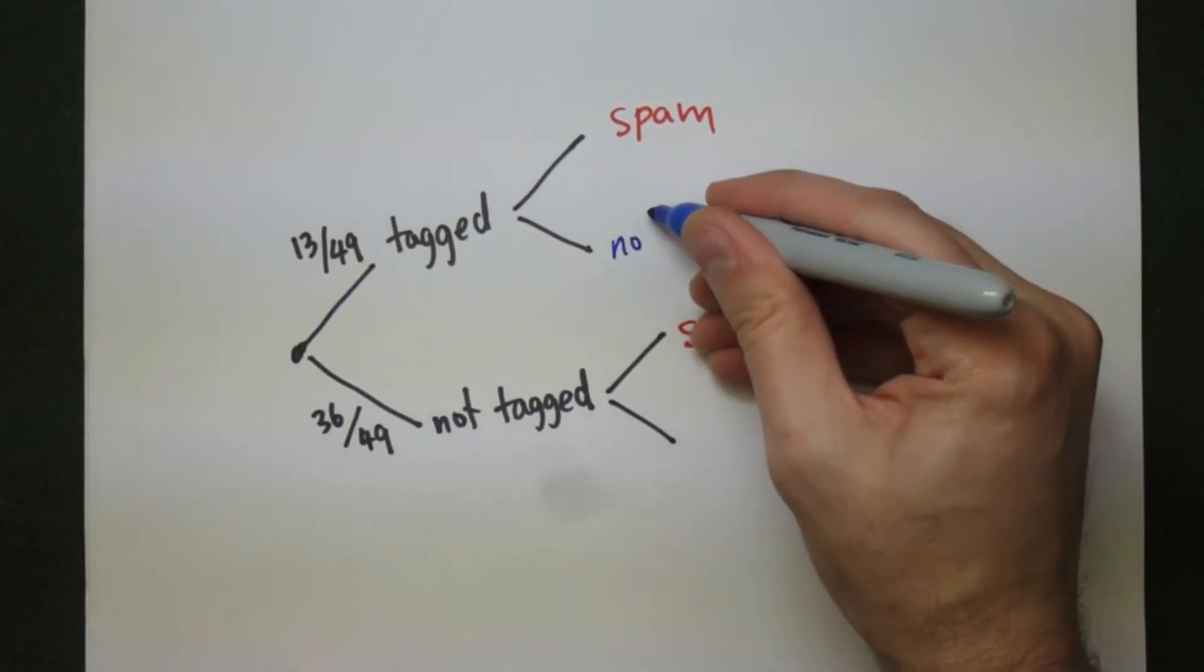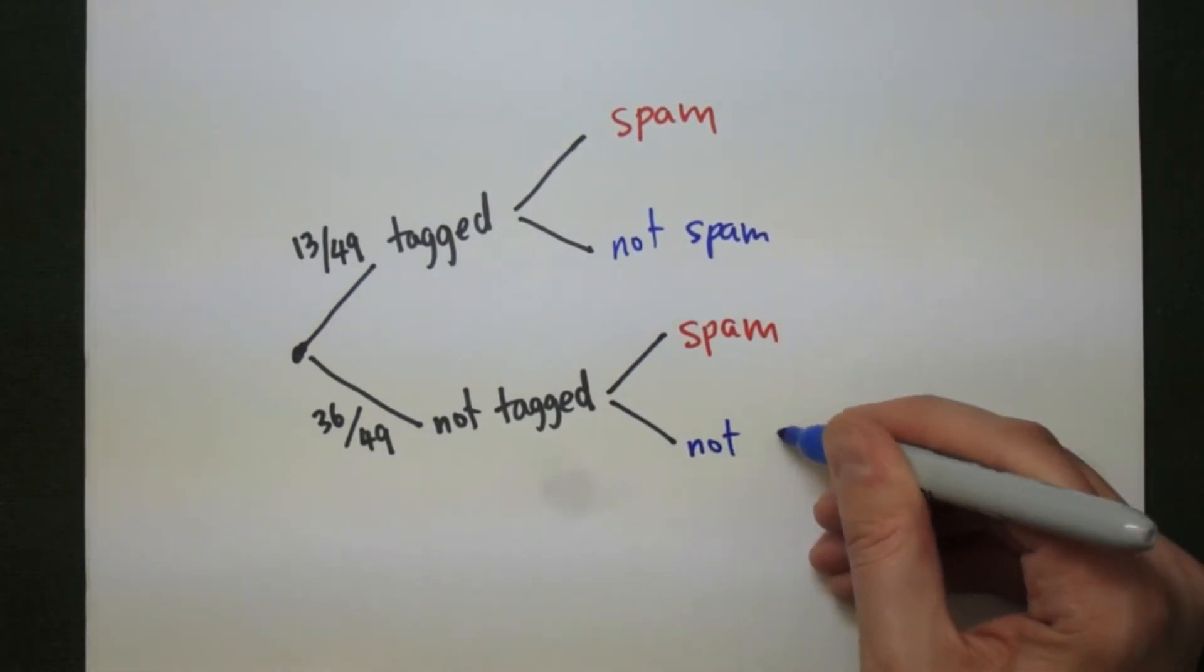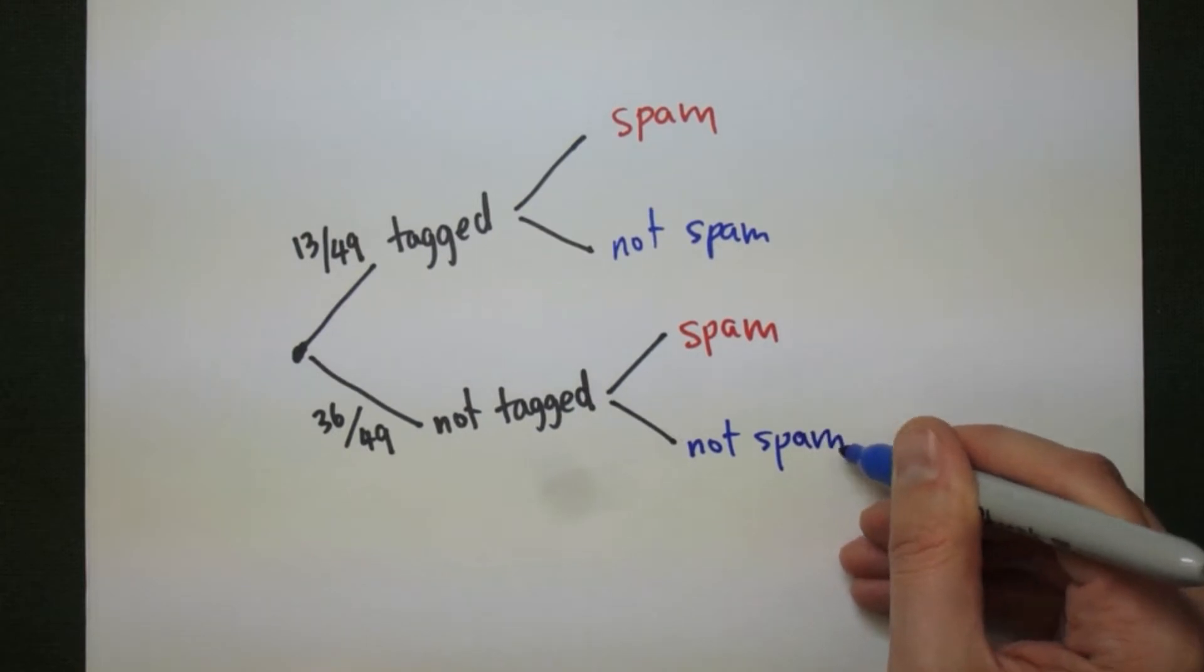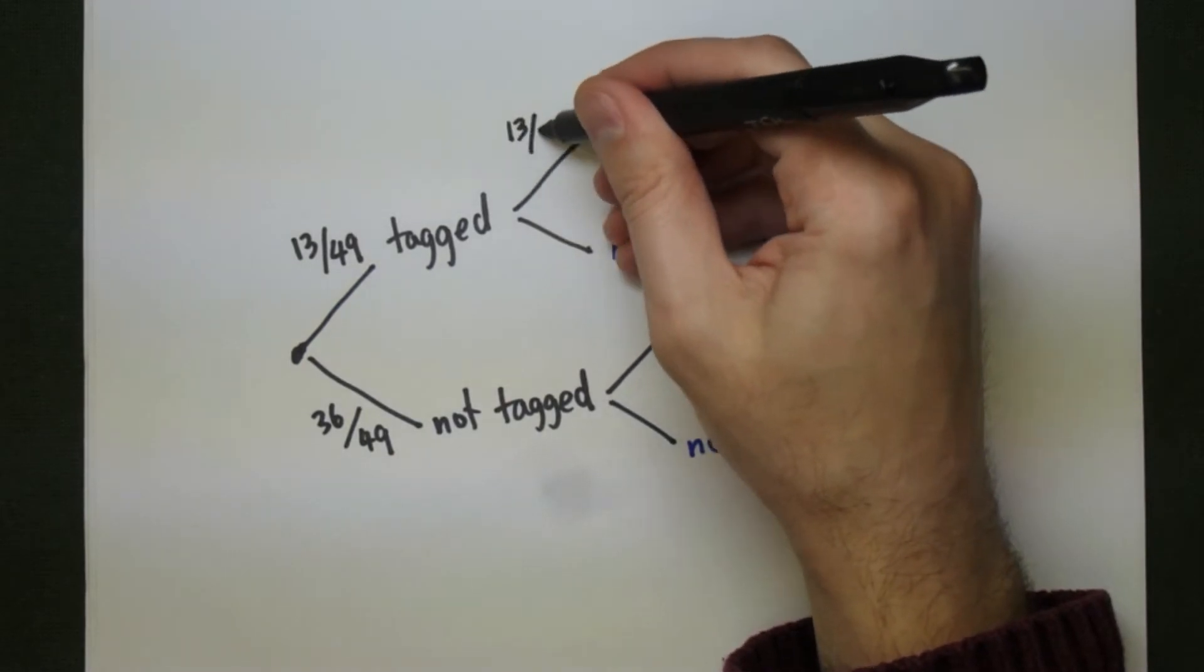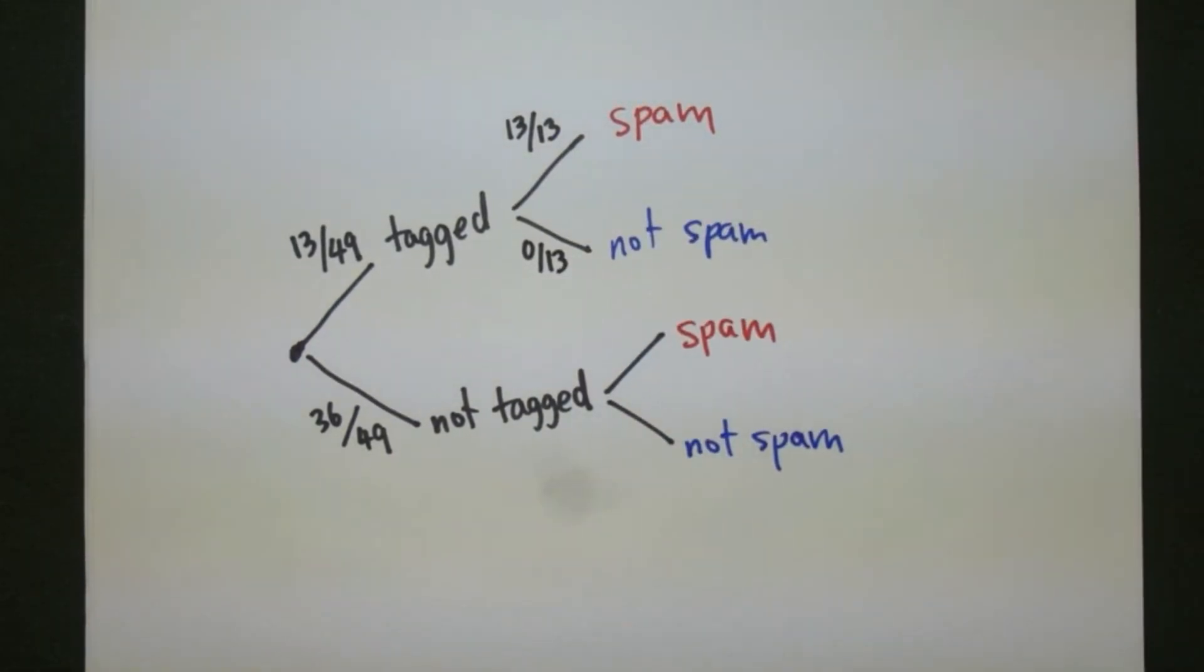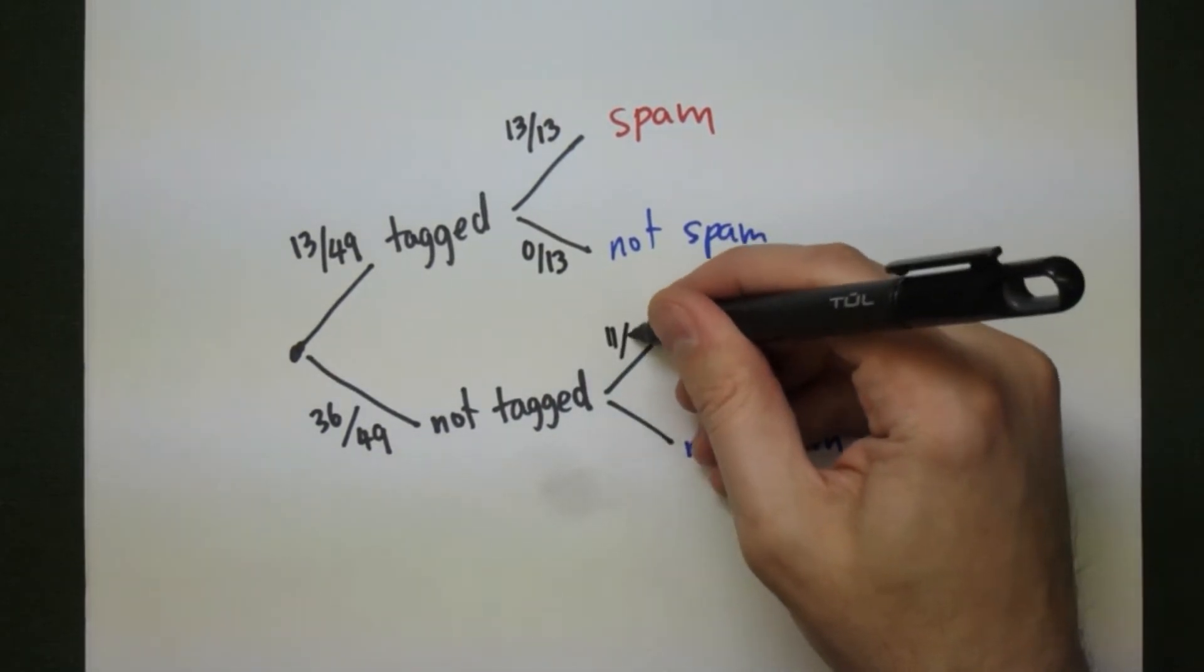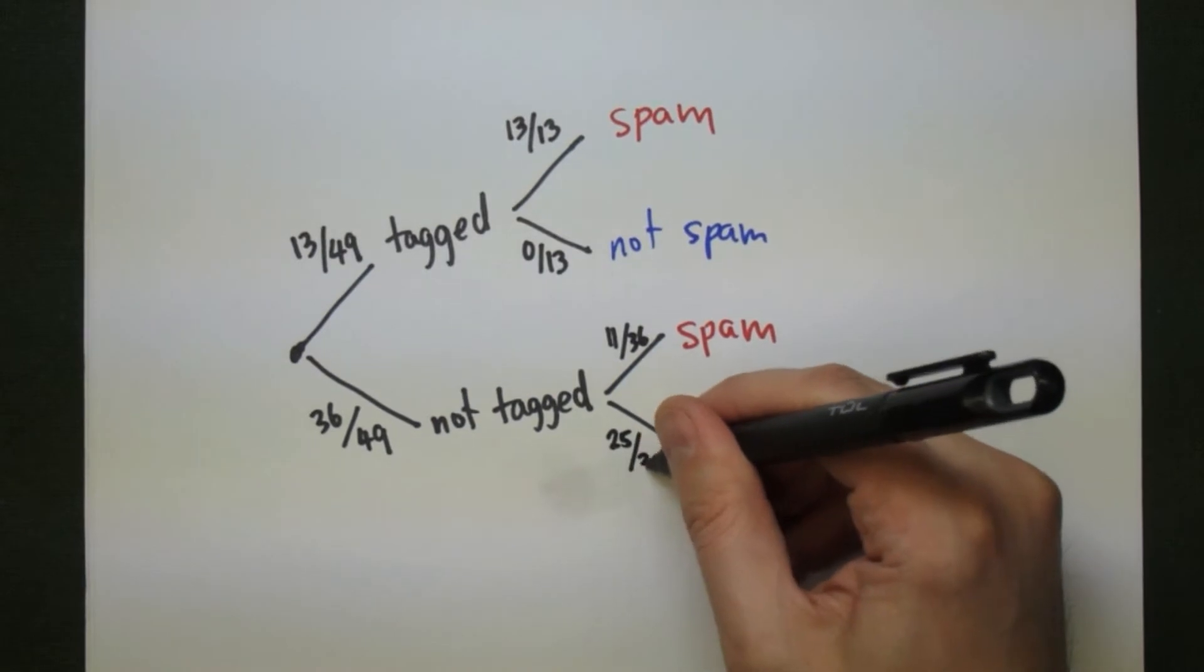Each of these probabilities now are going to be conditional probabilities, and we're going to look at the probability that something is spam given that it was tagged, and the probability that something is not spam given it's not tagged, and so on from there. So 13 out of the 13 tagged messages were spam, 0 were not spam, 11 of the 36 were spam if they were not tagged, and 25 of them were not.